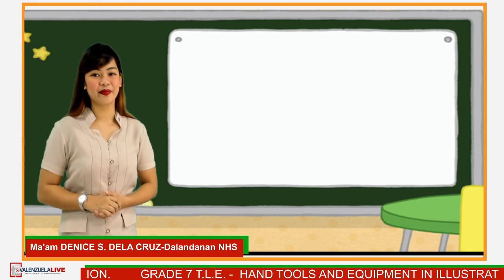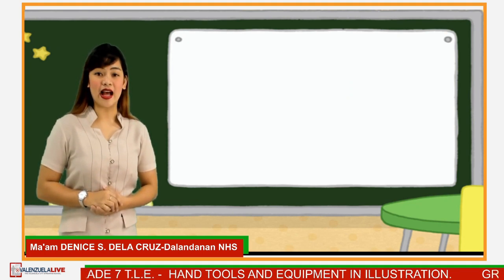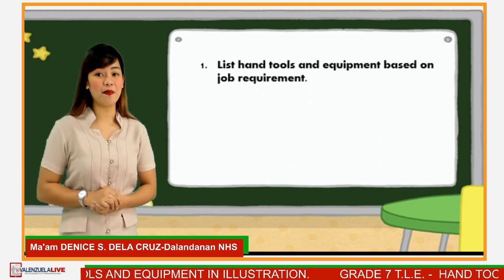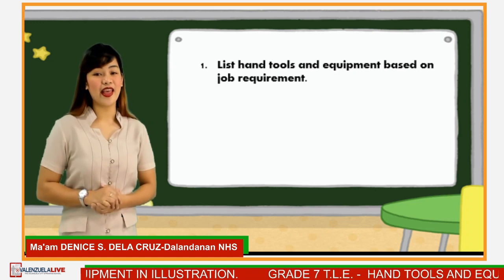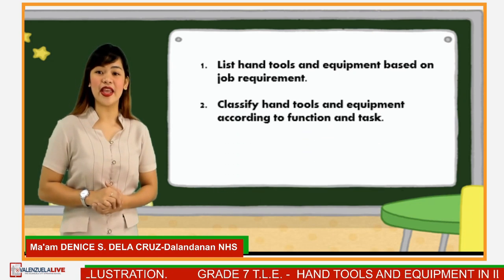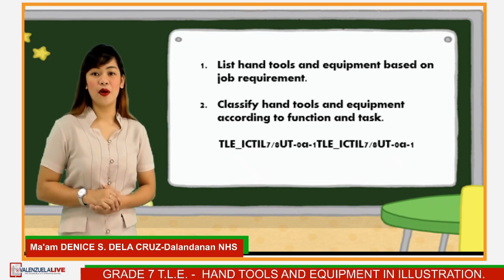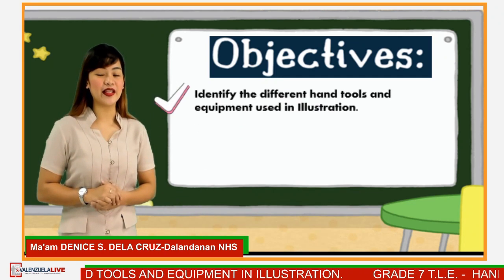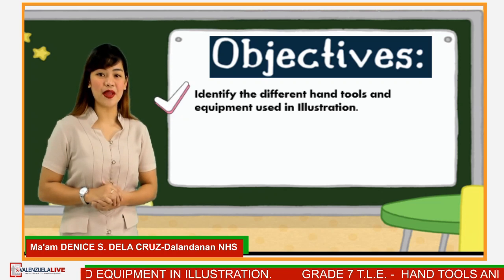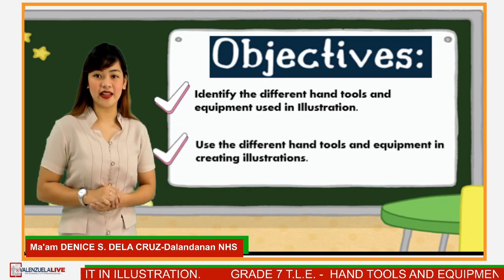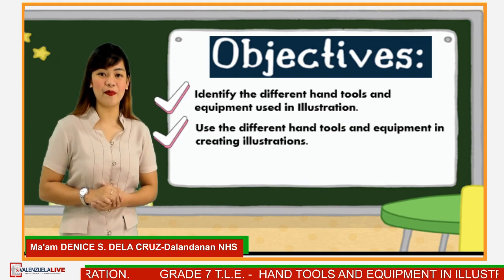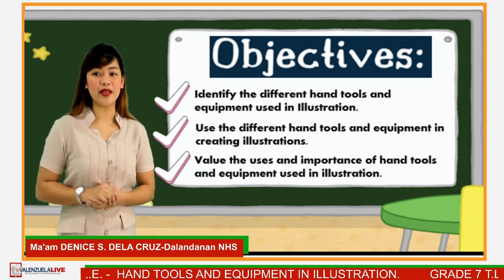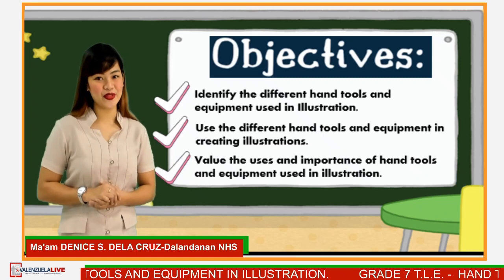Let's begin. Our learning competencies and outcomes for this day are: Number 1, list hand tools and equipment based on job requirement; and Number 2, classify hand tools and equipment according to function and task. For today's objectives, we will first identify the different hand tools and equipment used in illustration, use them in creating illustrations, and value their importance.